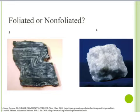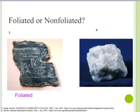What about rock number three — foliated or non-foliated? This would be foliated, because there are parallel layers. This is an example of gneiss. And last, rock number four — is this foliated or non-foliated? This would be non-foliated, because there are no layers or bands. This is an example of marble.